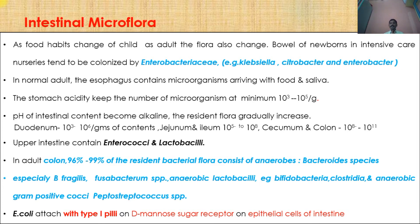In normal adults, the esophagus contains microorganisms arriving with food and saliva. Stomach acidity keeps the number of microorganisms to a minimum of 10⁻³ to 10⁻⁵ per gram of content, as the stomach environment is mostly acidic. As the intestinal tract goes down from the stomach to the duodenum, the pH of intestinal contents becomes alkaline and the resident flora gradually increases.